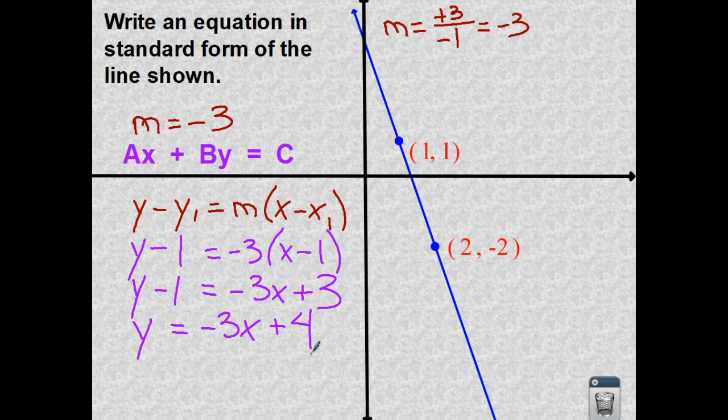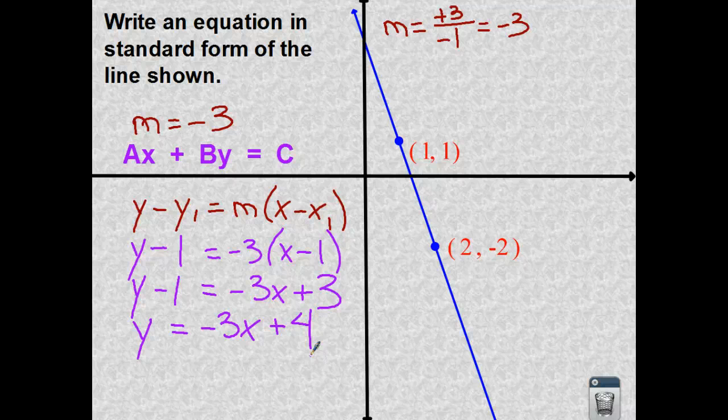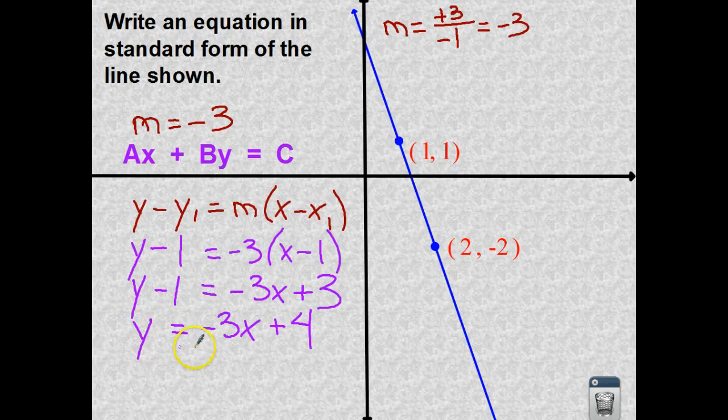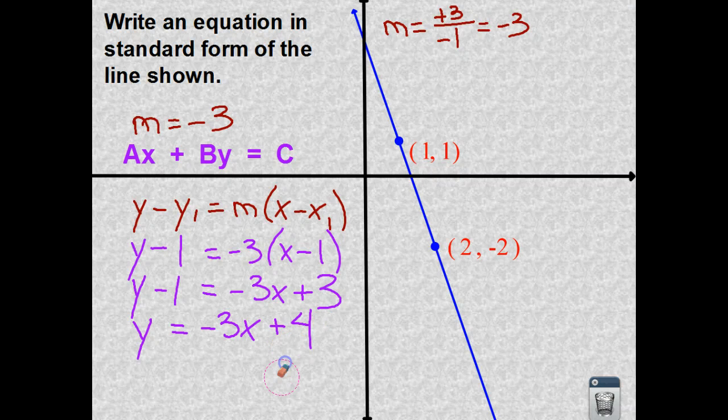I see that I am in slope intercept form. So we've seen two of our different forms so far. Now we're going to learn about the third form. So here again, we have the point slope form. We've turned the point slope form into slope intercept form. And now we're going to take the slope intercept form and we're going to turn it into standard form.